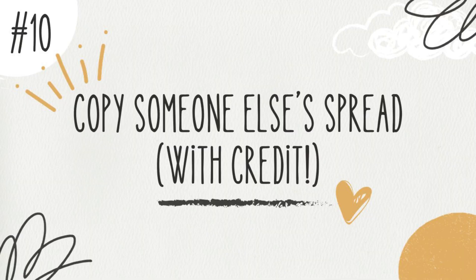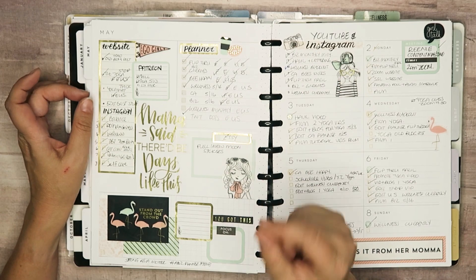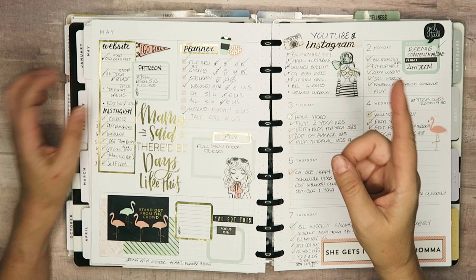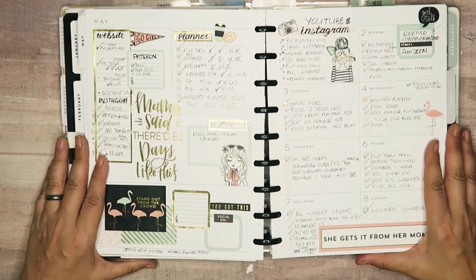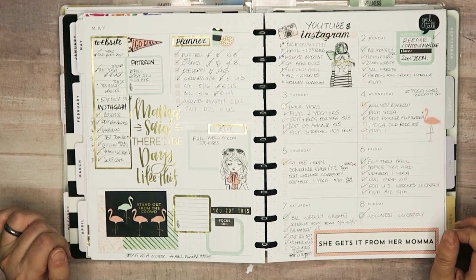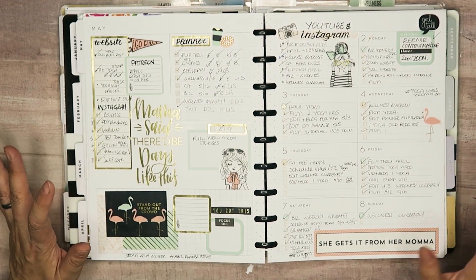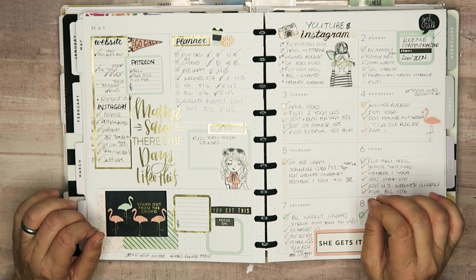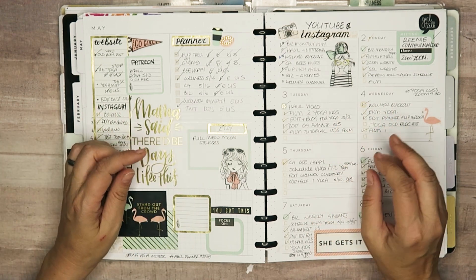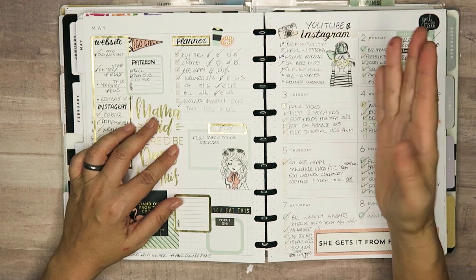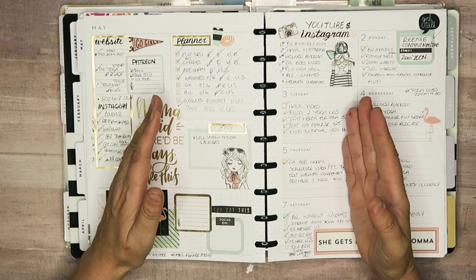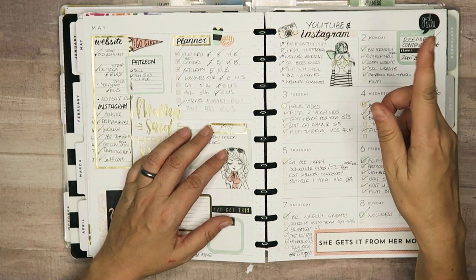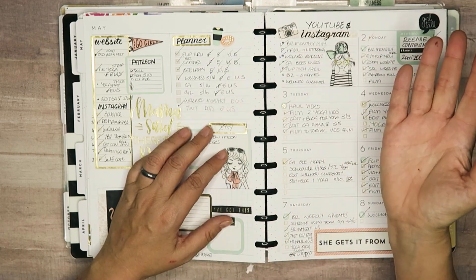Tip number ten is that if you see something online and think, 'Oh, I have that sticker book, I use that layout, I have those stickers,' and you like the way they've used them — just recreate it. Stop trying to reinvent the wheel, it's just planner stickers. I have a video all about how to get inspired from content creators and I'll leave that link here. There are tons of ways to get inspired by content you see on social media.